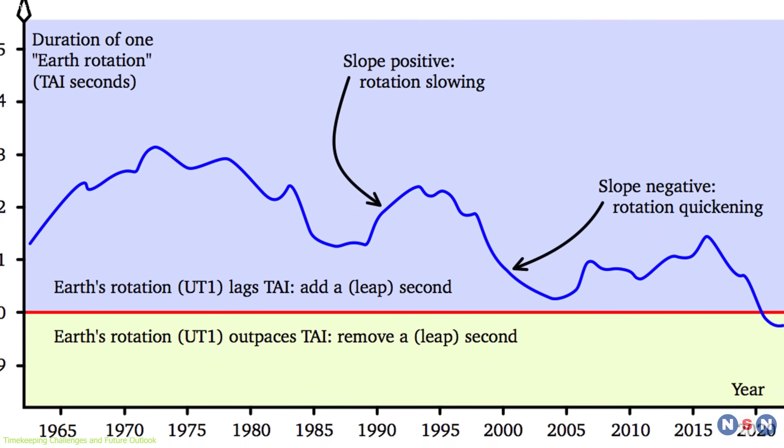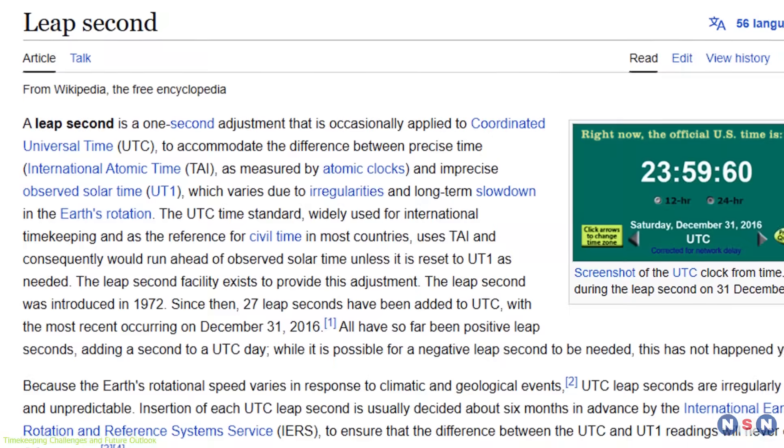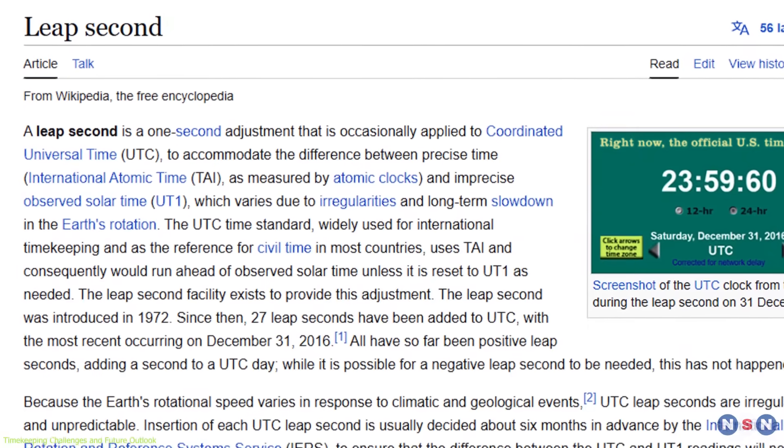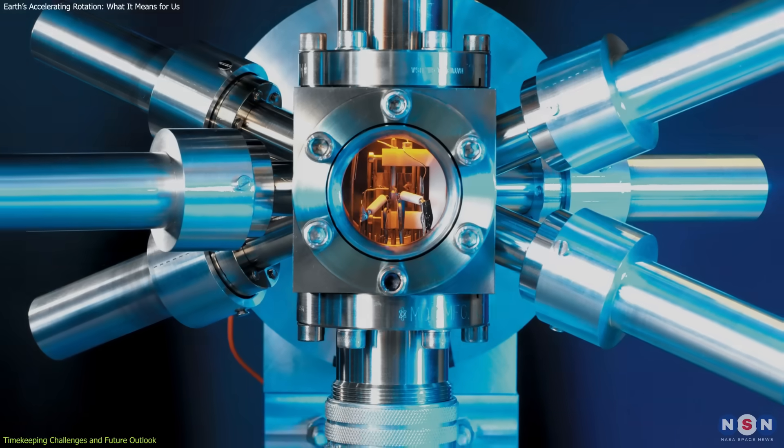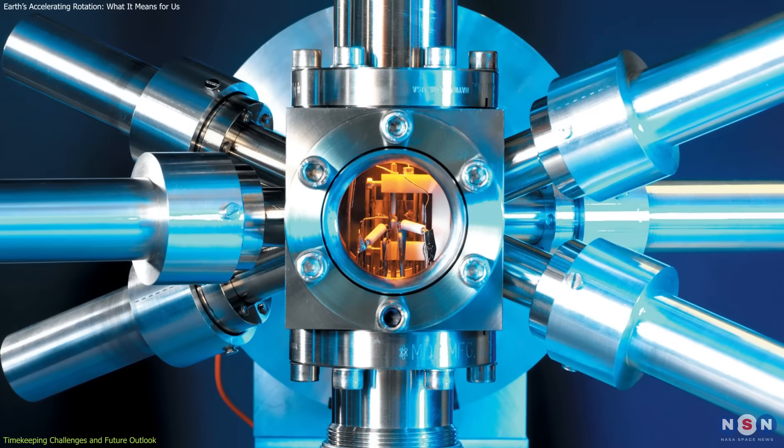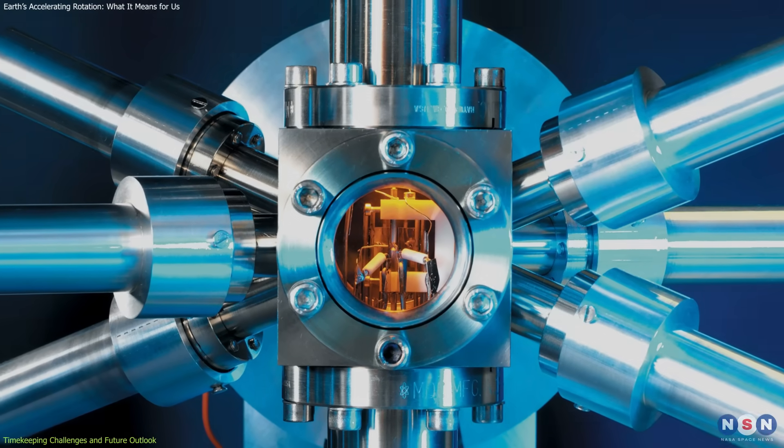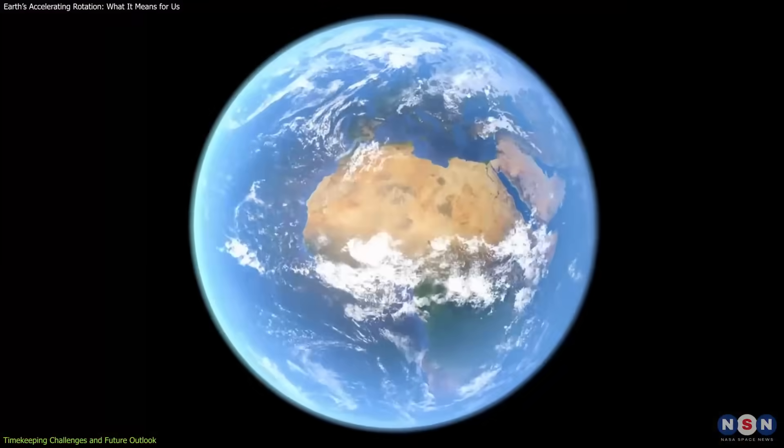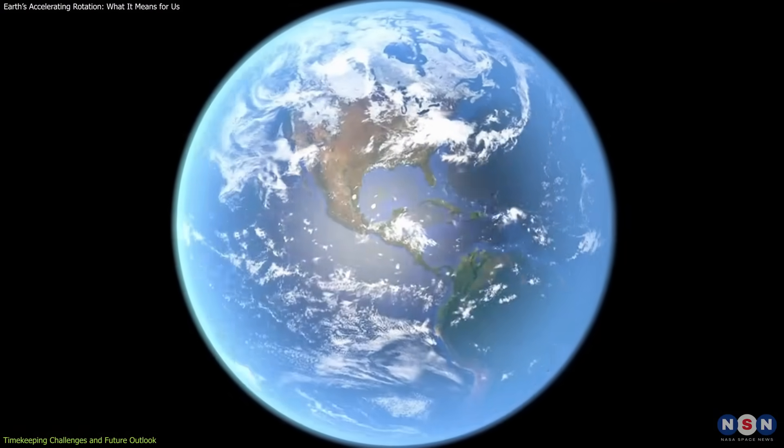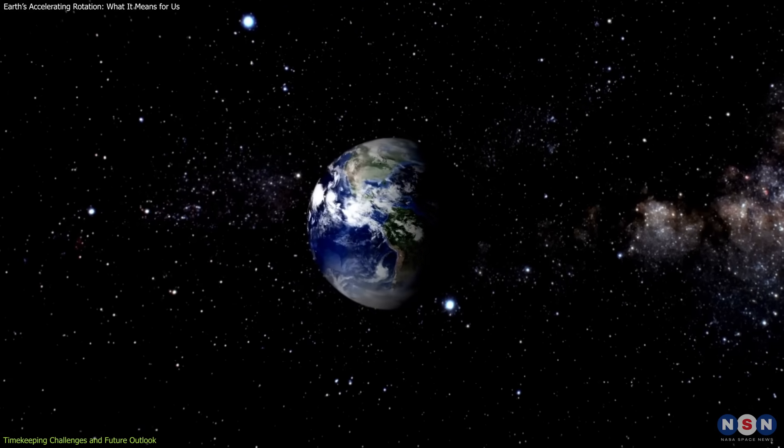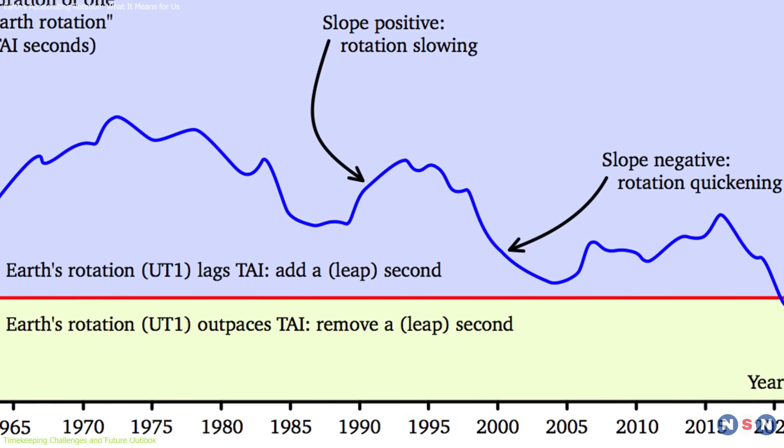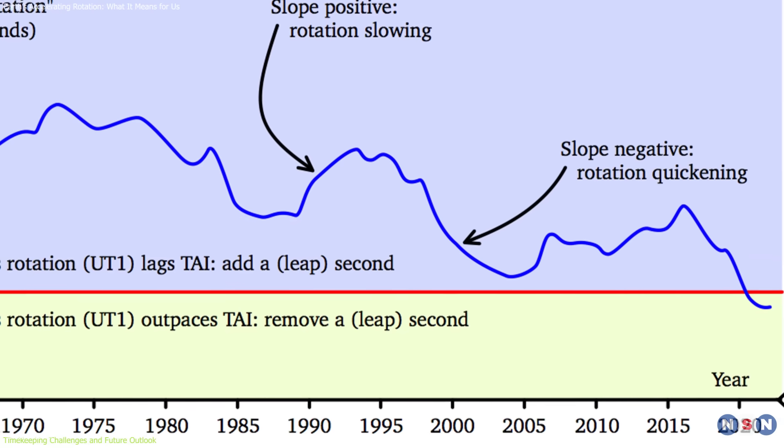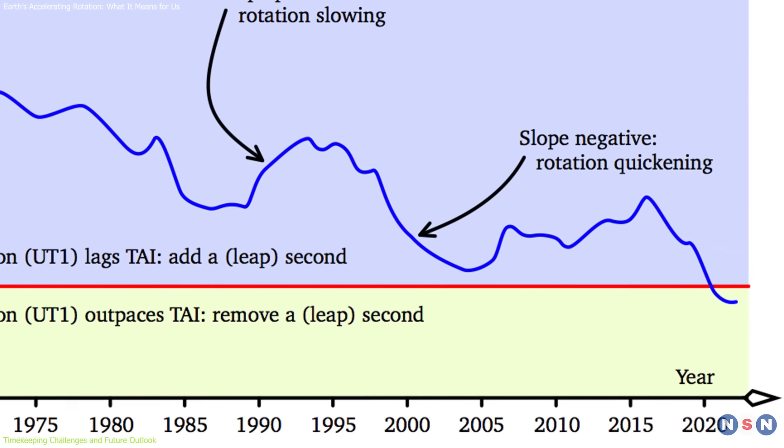To make these adjustments, the IERS occasionally introduces leap seconds, additional seconds added or subtracted from Coordinated Universal Time. These adjustments are essential to maintaining the alignment between atomic time and the time we experience on Earth. However, as Earth's rotation accelerates, there is a possibility that a negative leap second will be needed. This would involve subtracting a second from UTC to compensate for the planet's faster rotation.